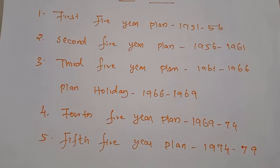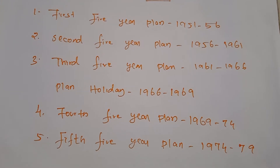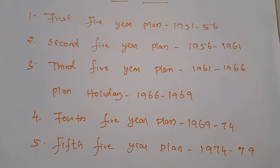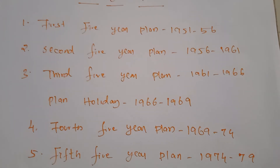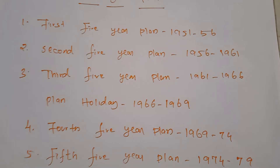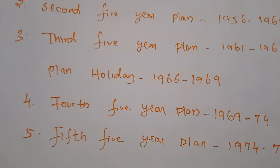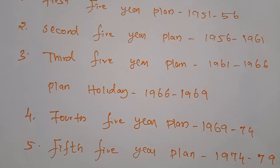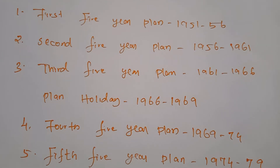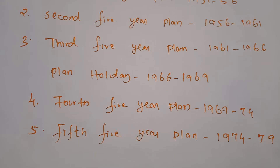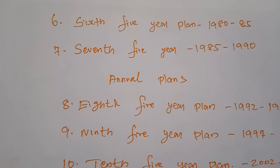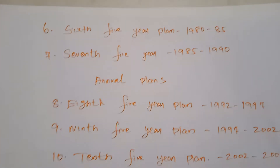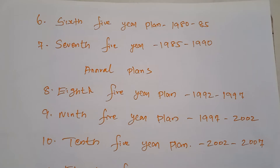Next is the five-year plan. If you want to do something, you have to plan perfectly — a perfect plan is equal to completing 50 percent of the work. Similarly, the government decided to implement five-year plans. Economic planning is the process in which limited natural resources are used skillfully to achieve desired goals, and the government has to have perfect planning to achieve those goals.